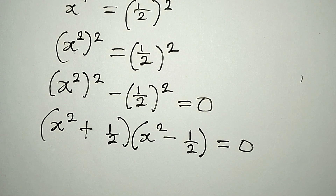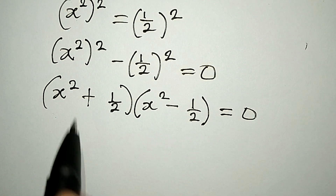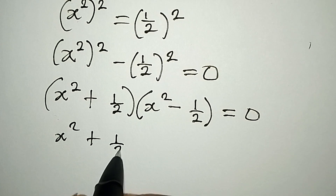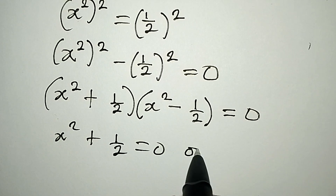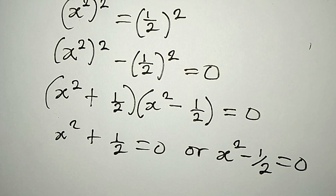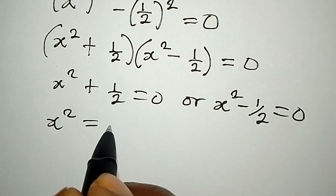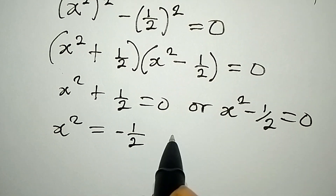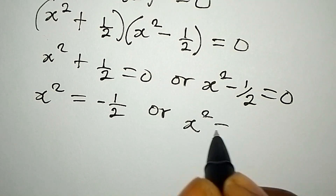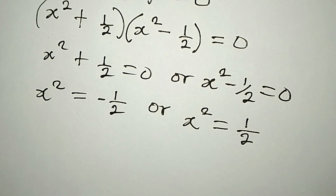Remember when I said we are going to have four solutions. From here we apply the zero product property, so it is either x squared plus 1 over 2 equals 0, or x squared minus 1 over 2 equals 0. This gives x squared equals negative 1 over 2 or x squared equals positive 1 over 2.